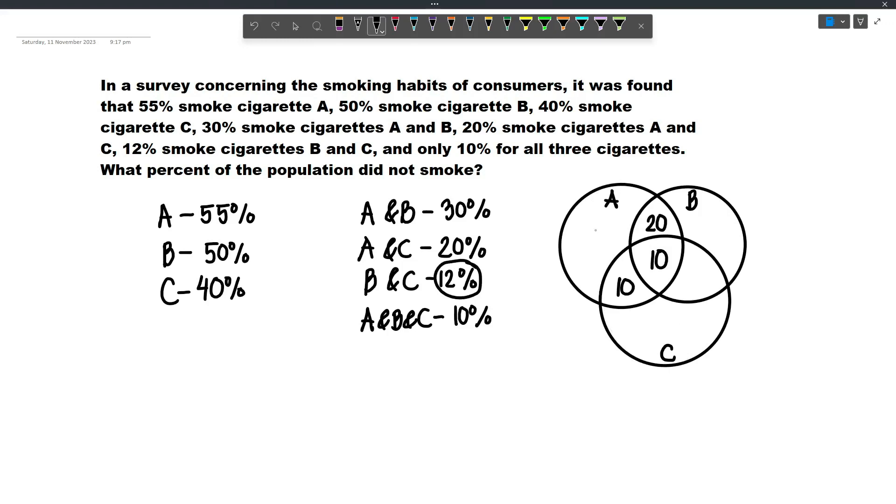And now let's look at this one. 12% of the population smokes B and C, and so the value between B and C would be 12 minus 10, which is equal to 2.